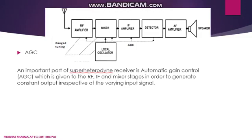Another important block is the AGC — automatic gain control, sometimes also represented as ABC. It is an important part of the superheterodyne receiver, which is fed back to the RF, IF, and mixer stages in order to generate a constant output irrespective of varying input signals.